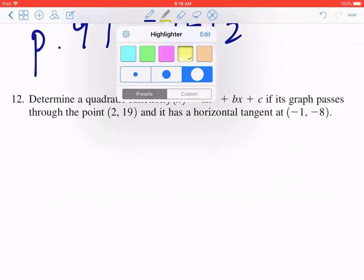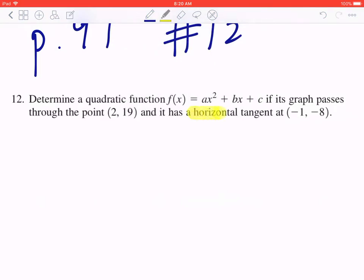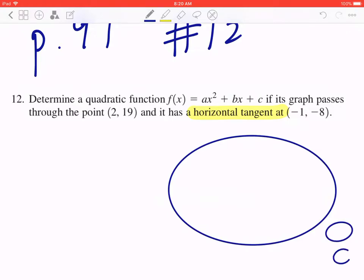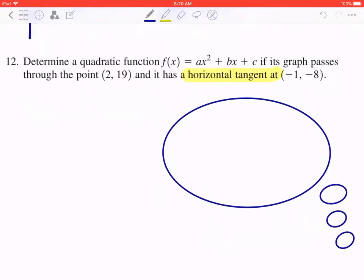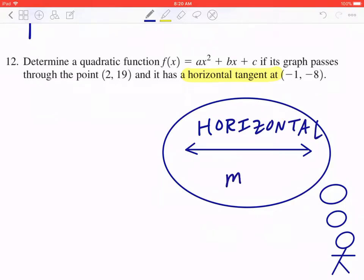Step 1, if you highlight one of the key words, horizontal tangent, this means you're thinking about a horizontal line. So when you draw a diagram or when you imagine this in your mind, this is telling you that the slope of a horizontal line equals zero.